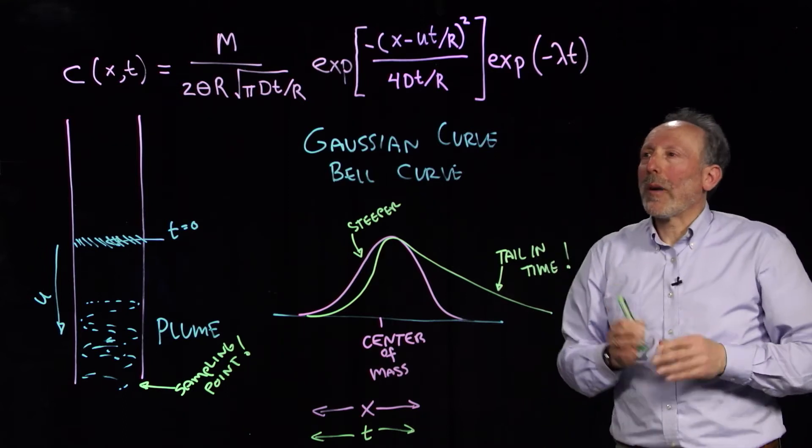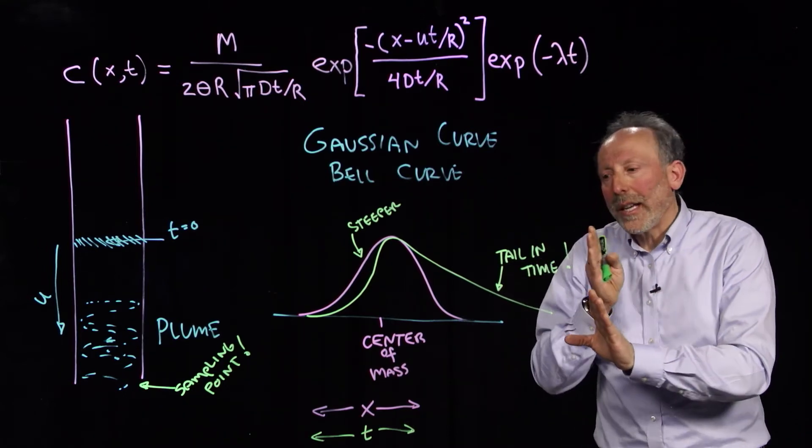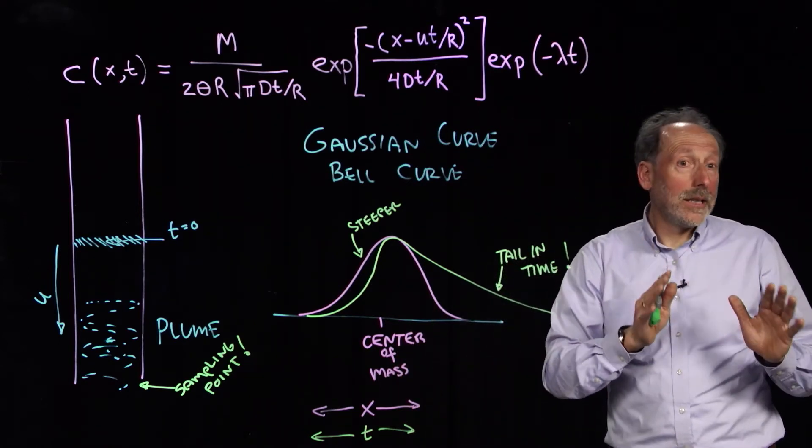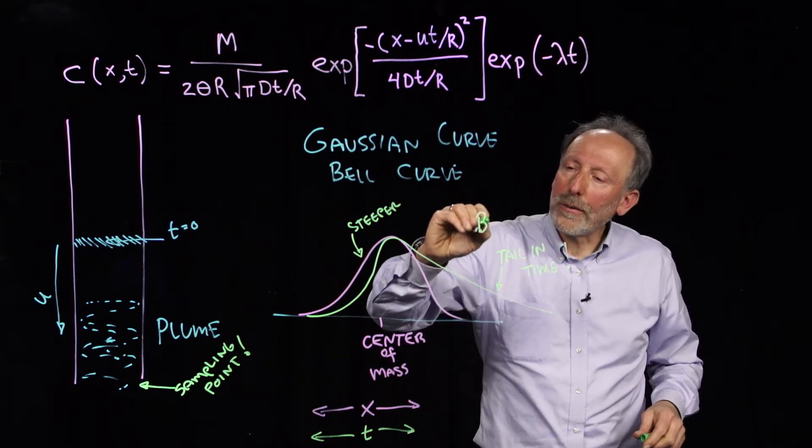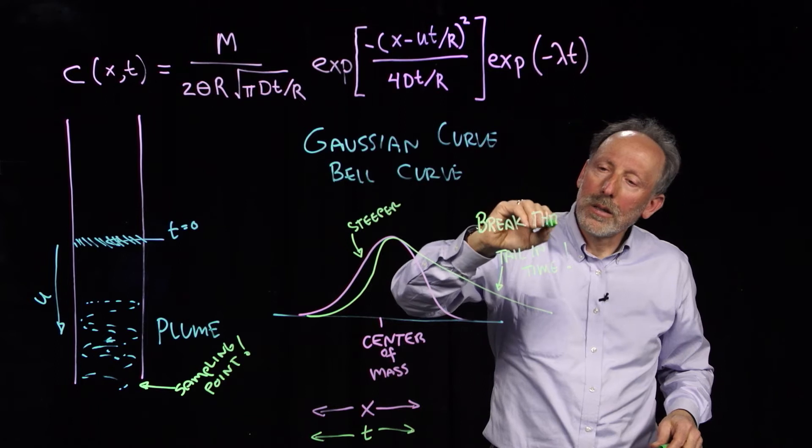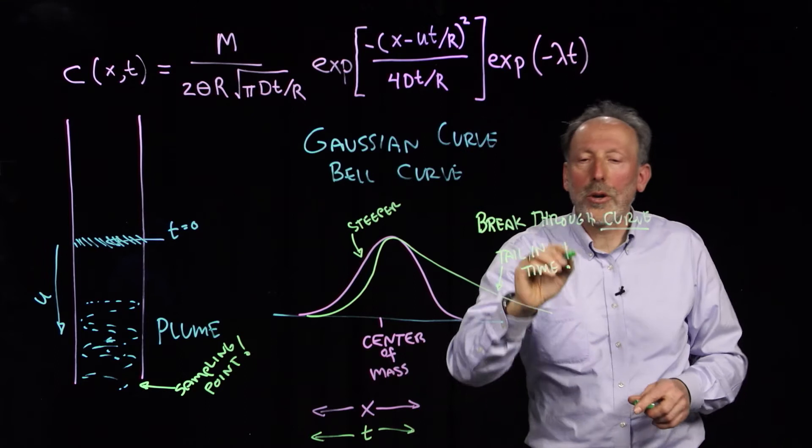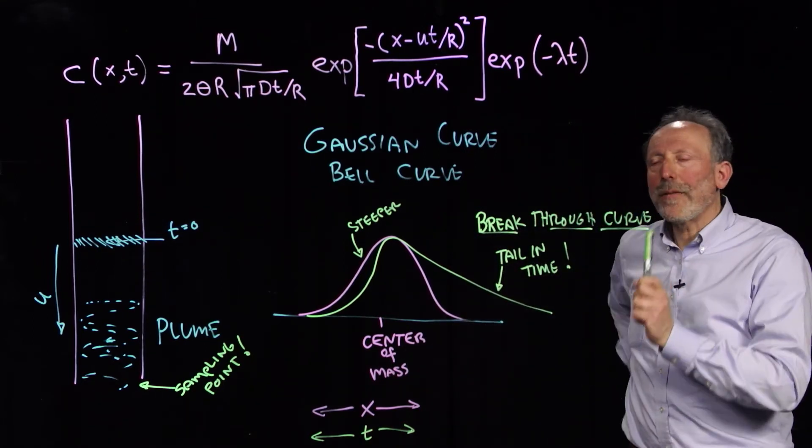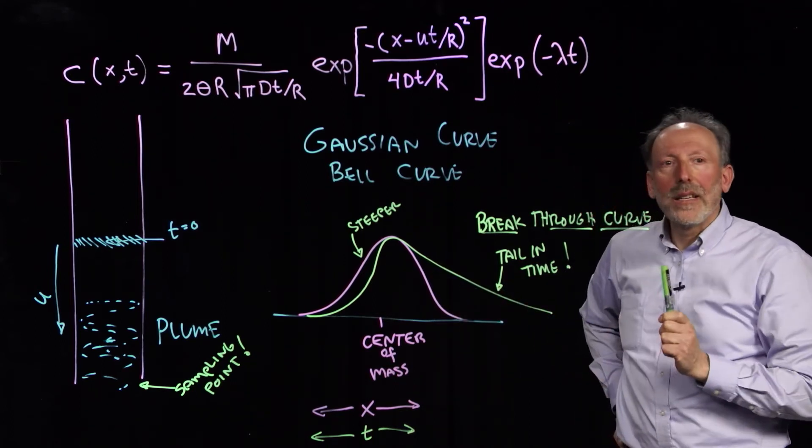And so, what I want you to really take from this is the fact that watching in space, and watching in time, give fundamentally different shapes. And this, which we call the breakthrough curve, the breakthrough curve is watching in time. That's by far the most common thing to have, and it will always have an extended tail.